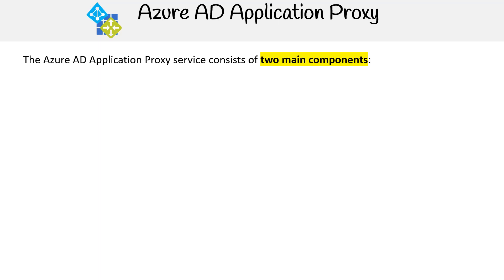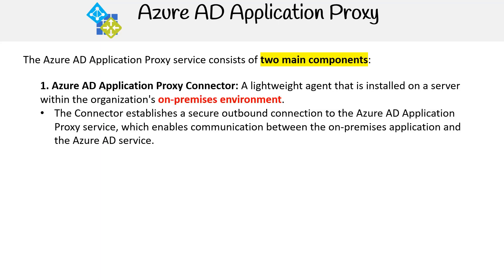The Azure AD Application Proxy service consists of two main components. Component one is the Azure AD Application Proxy connector, a lightweight agent that is installed on a server within the organization's on-premises environment. The connector establishes a secure outbound connection to the Azure AD Application Proxy service, which enables communication between the on-premises application and the Azure AD service.